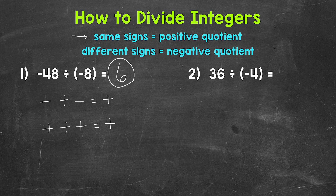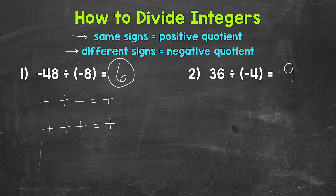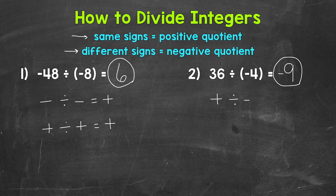Let's move on to number 2 where we have positive 36 divided by negative 4. Let's think of this as 36 divided by 4, which is 9. Now we need to determine if that quotient is positive or negative. We have a positive divided by a negative — different signs — so that is a negative quotient. 36 divided by negative 4 equals negative 9. For different signs: a positive divided by a negative equals a negative, and a negative divided by a positive also equals a negative.